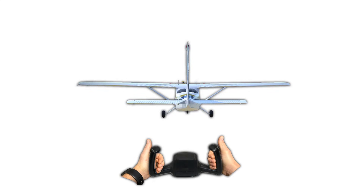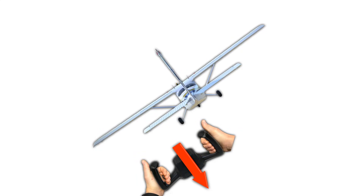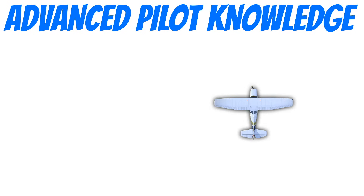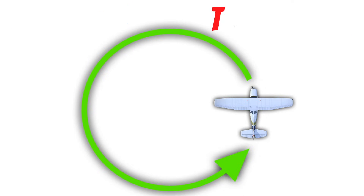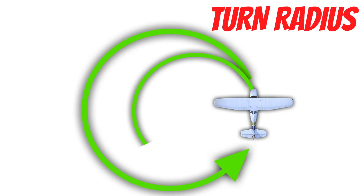To turn the airplane, we need to roll and pull. Now that you're in a more advanced phase of training, you also need to understand how to control your turn radius and the turn rate of your aircraft. Turn radius is simply the size of the circle you make any time you turn the aircraft. And there are two main things that directly affect your turn radius: airspeed and bank angle.